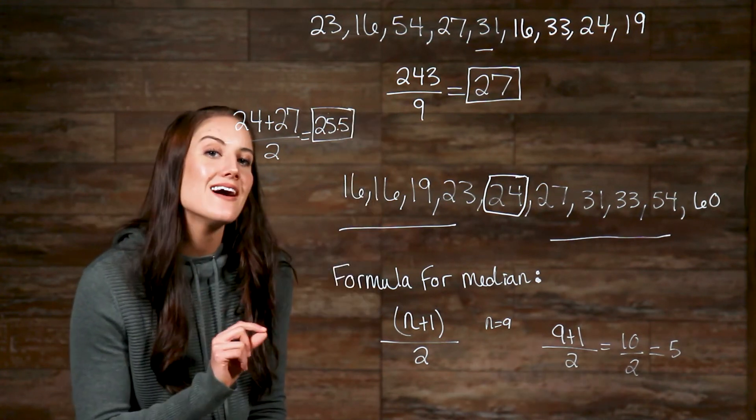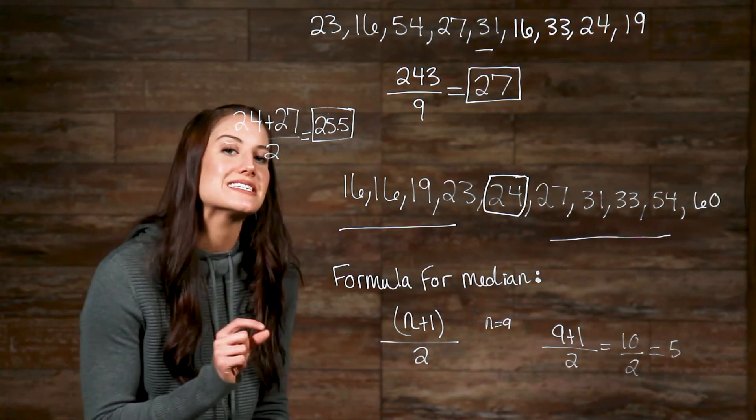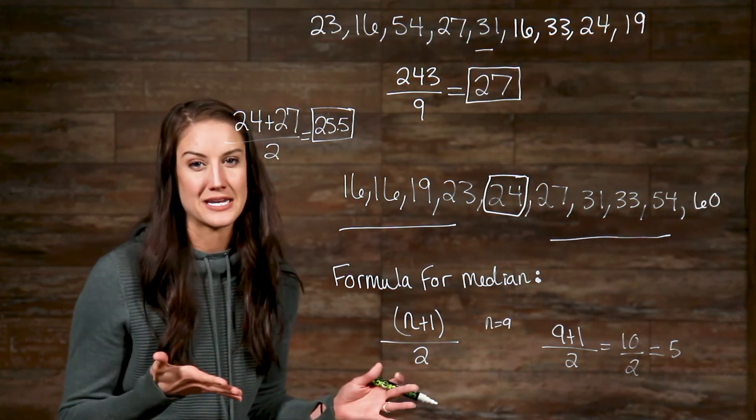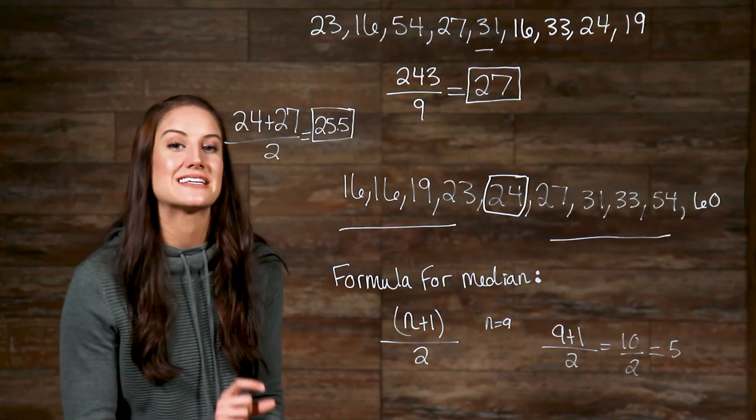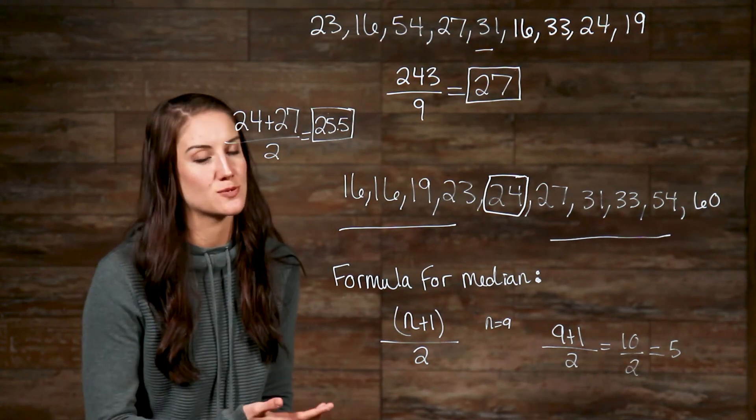So, remember, when you have an odd amount of numbers, like in our example here, you just take the number in the middle and that's your median. But when you have an even amount of numbers, you have to take the two middle-most numbers and then take their mean to get your median.